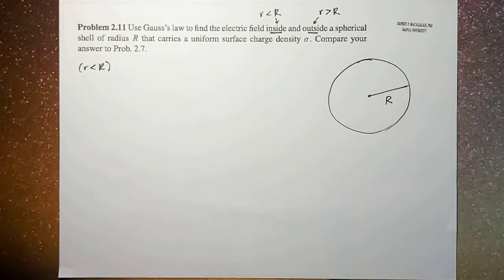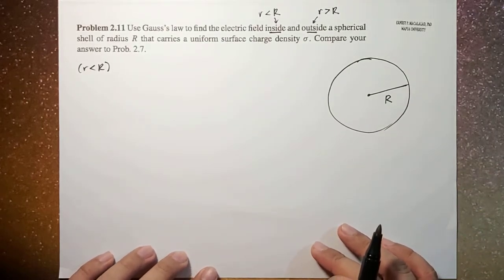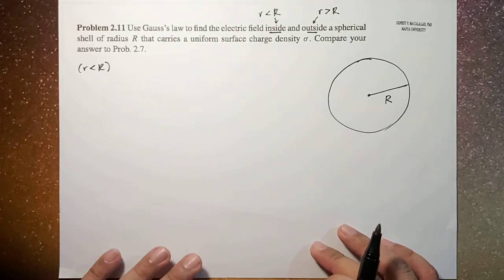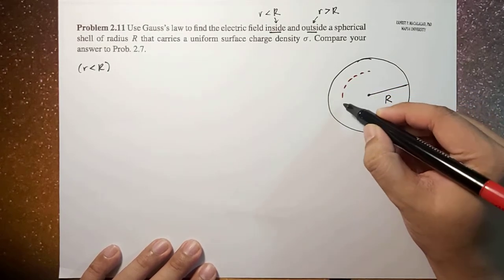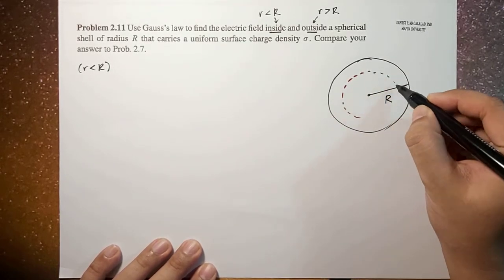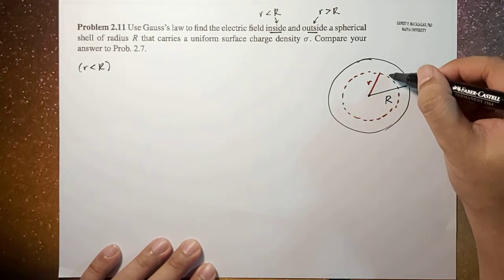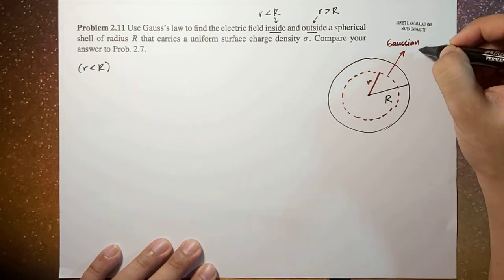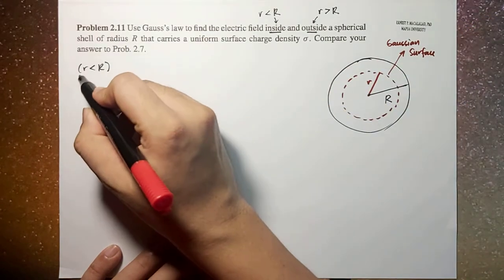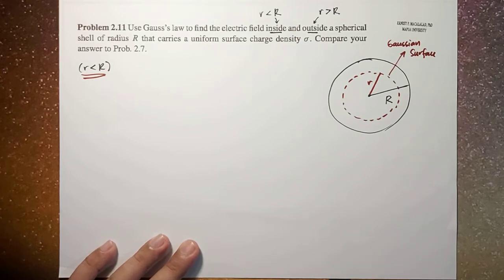So in this case, the Gaussian surface that we're going to use is a spherical one, so that we'll be able to use Gauss's law easily because of the spherical symmetry. So this is now the Gaussian surface — this is r. So this is your Gaussian surface for r less than capital R.